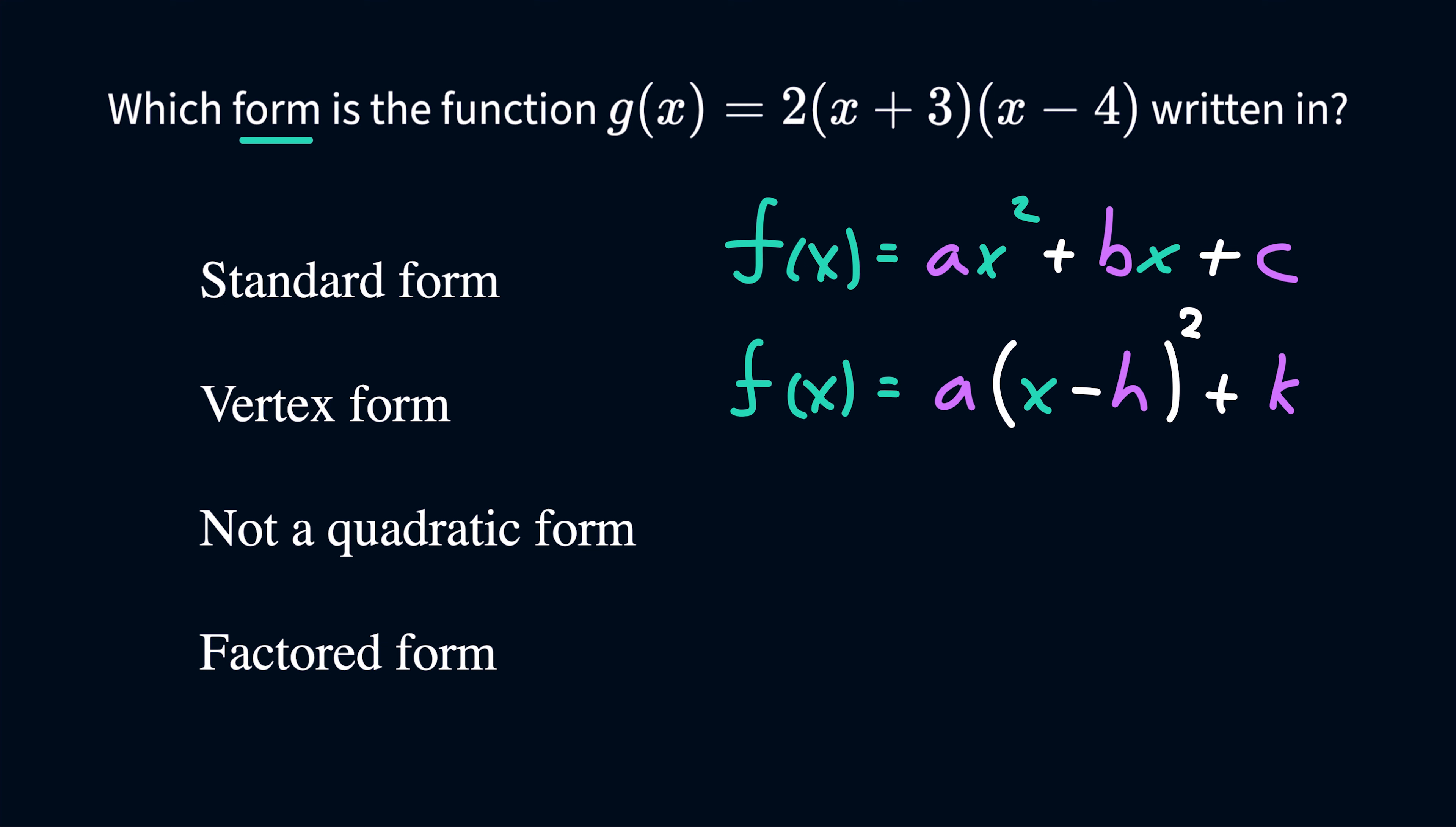And then last but not least, we also have something known as the factored form. So the factored form of a quadratic looks something like this. We're going to have a leading coefficient of a, and that's then going to be multiplied by two binomials. And in each binomial, you're going to have x in it, the variable.